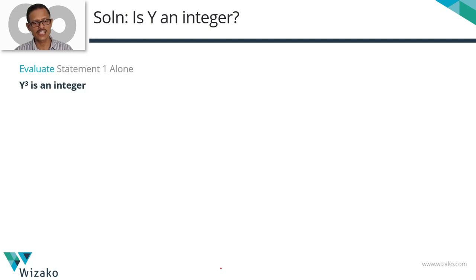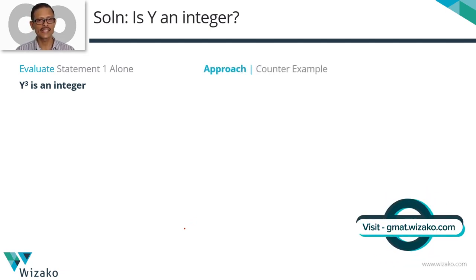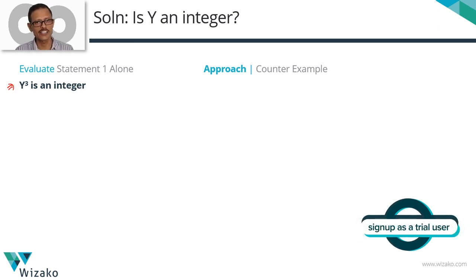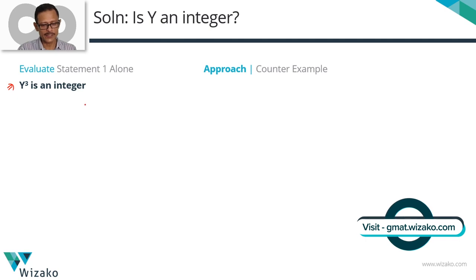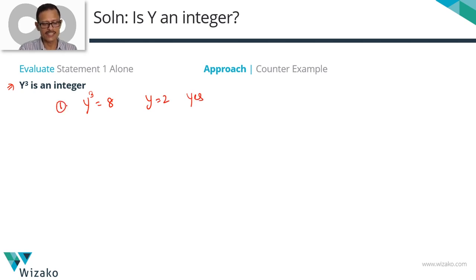Let's start with statement 1 alone. The approach I'm going to take for this statement — which says y cube is an integer — is what we'll call a counter-example. We'll look for one value where y is an integer and one where y is not. Start with y cube equals 8. So y equals 2. Is y an integer? Yes. We've got one example where y cube is an integer and y is also an integer.